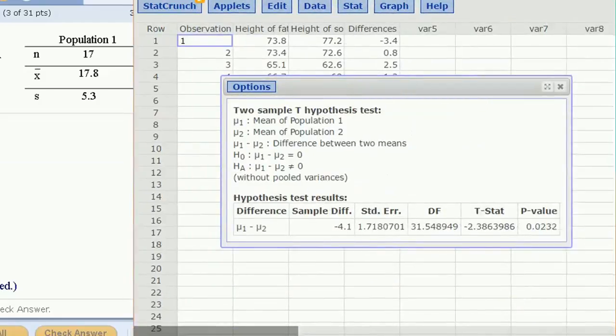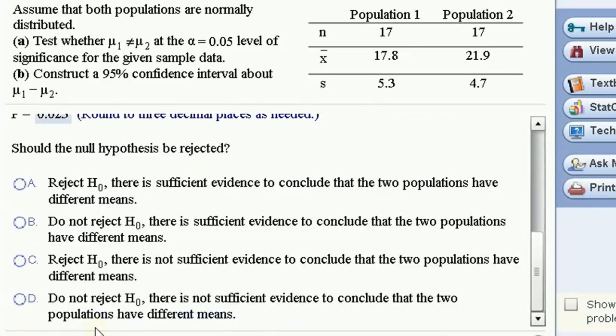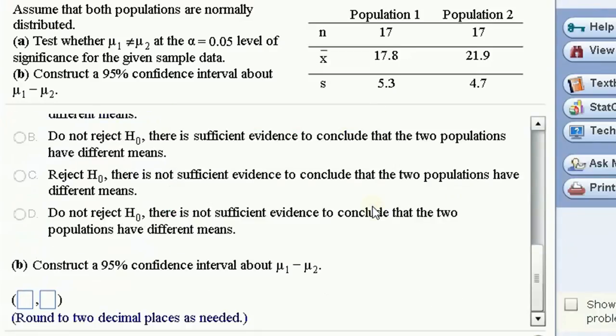Let's move this over a bit. The p-value is right here, three decimal places. 0.023. That's pretty low. It's lower than 0.05, so we would reject the null hypothesis. There is sufficient evidence to conclude the two populations have different means.